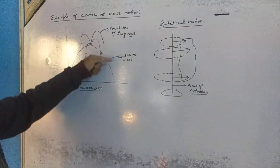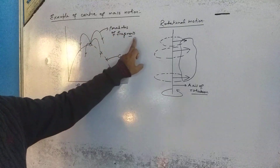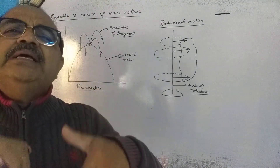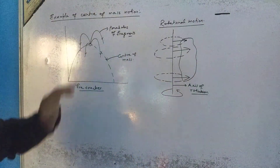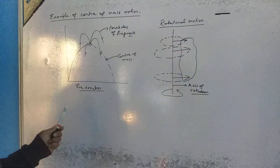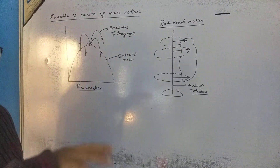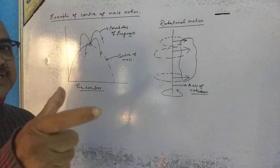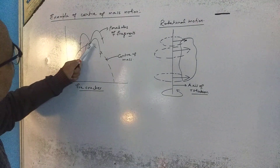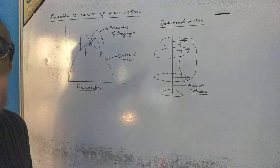When it bursts, its fragments will be moving in different directions. I have shown parabolas of fragments — all these fragments are moving in parabolic paths, but in separate, different parabolic paths. However, if we check, the center of mass of the system — all the fragments together — must have a center of mass, and that center of mass will follow the original parabolic path.